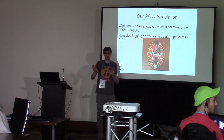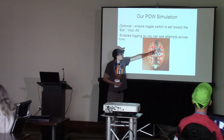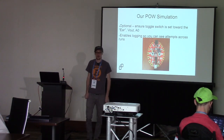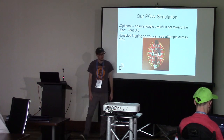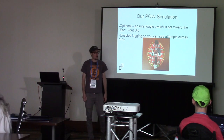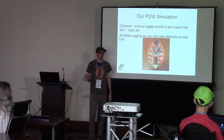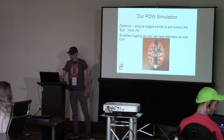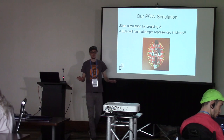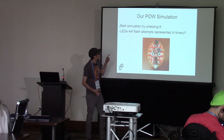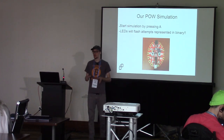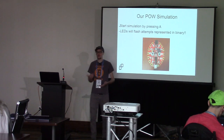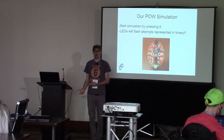You can actually run the simulation by pressing the A button. You're going to see a bunch of LEDs flashing on the board. This represents the hash outputs of the proof-of-work algorithm and all the attempts it's making to find a random number where the final solution meets our difficulty requirement. Press the A button as many times as you want to get it to run.